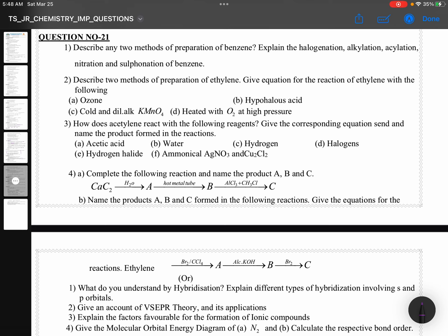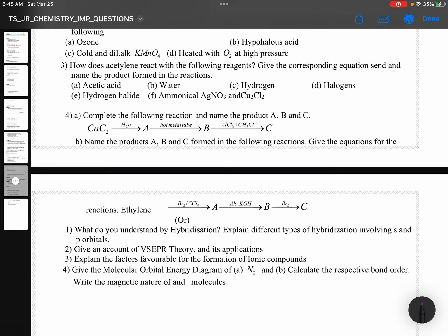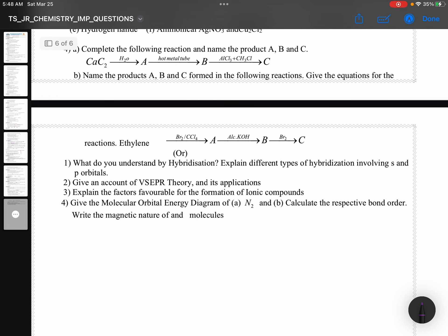Complete the following reaction: CaC2 with water gives C2H2. Hard metal tube, benzene, AlCl3, CH3Cl gives Friedel-Craft alkylation, toluene. Name the products A, B, C. And here ethylene, Br2, CCl4 gives 1,2-dibromoethane. Alcoholic KOH will be giving you, that should be alc. KOH actually, then that will become ethene. Ethene will be with Br2 giving 1,1,2,2-tetrabromoethane.